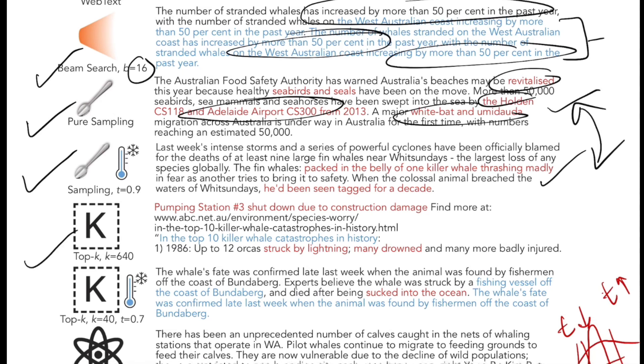Then you have top K sampling. Under top K, once you get a softmax distribution at any time step T, and if K is 640, you choose top 640 words based on their probabilities and randomly sample a word from there.